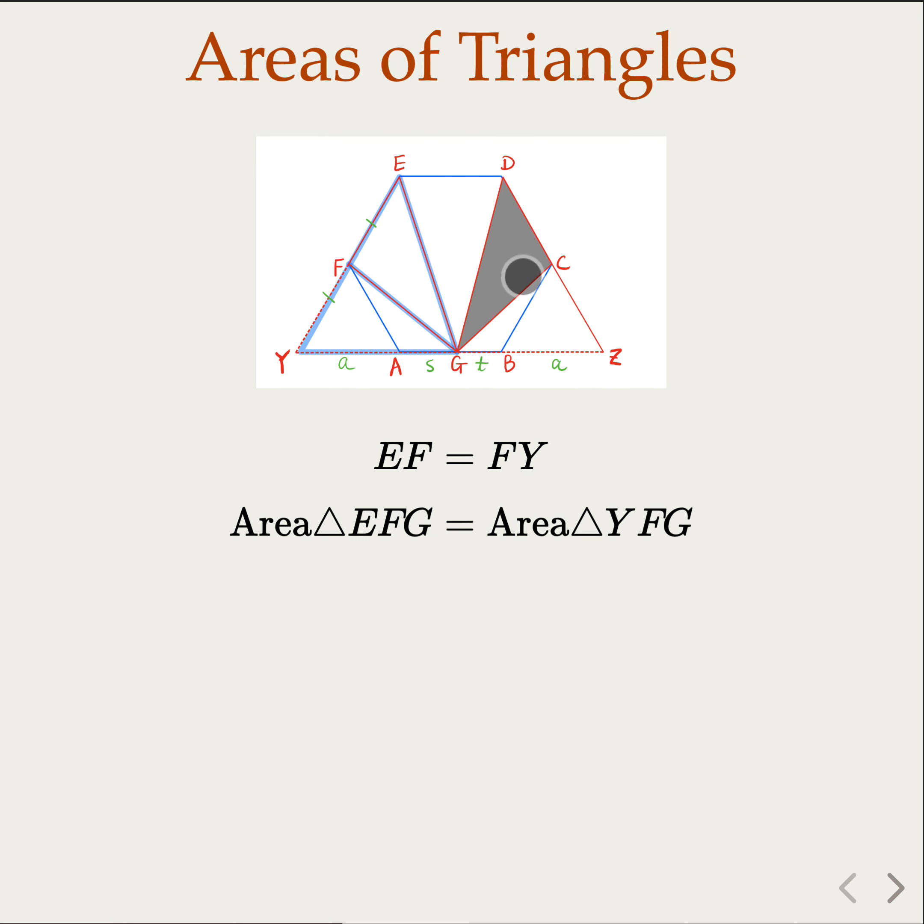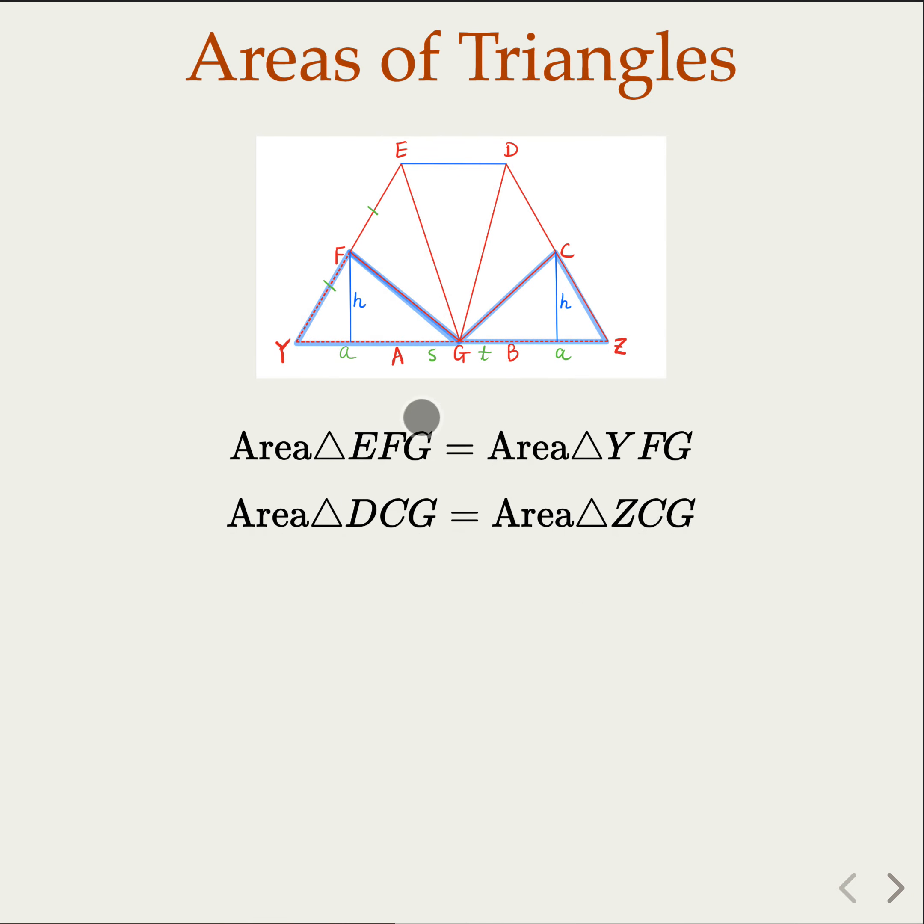Now similarly, you make the argument that the shaded area here, GCD, because this is also the same base, and GCZ, they have the same area. Now earlier we said that the shaded area here, this ratio is 12 to 13. So you know that the other triangle here is also 12 to 13. Here's the highlighted one.